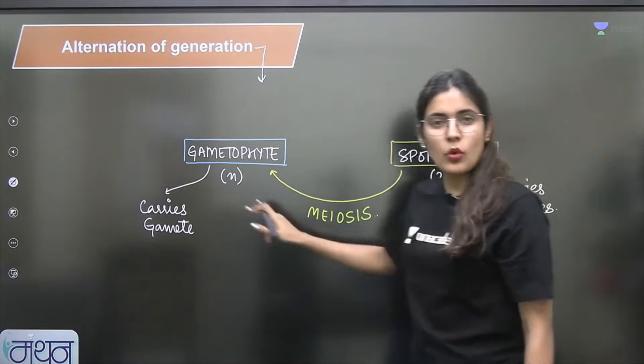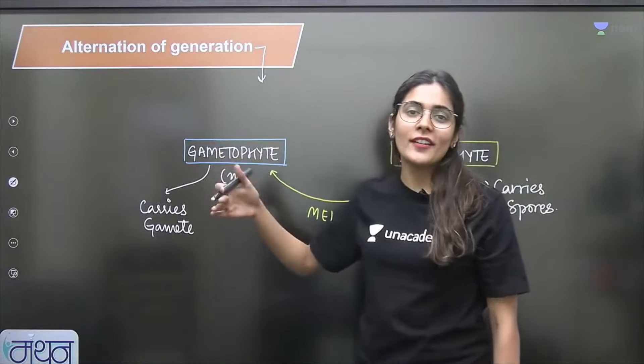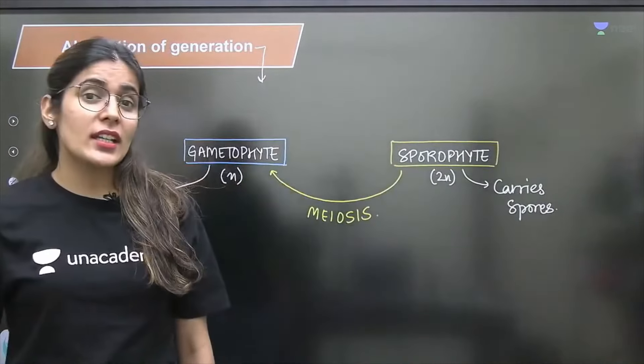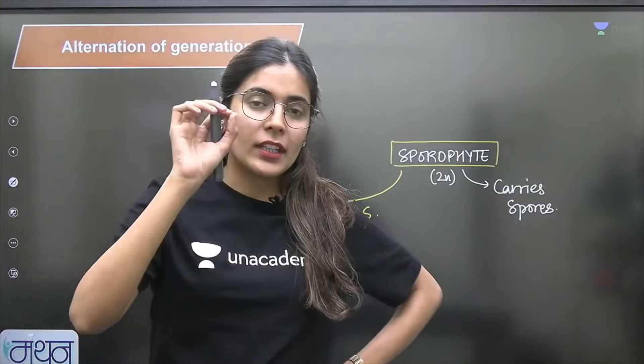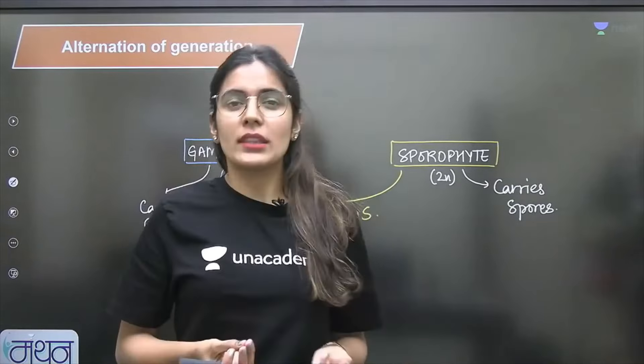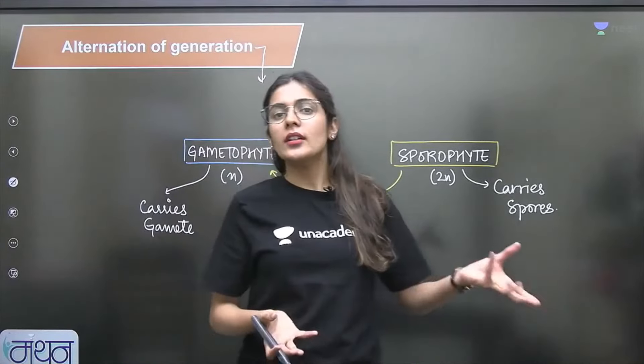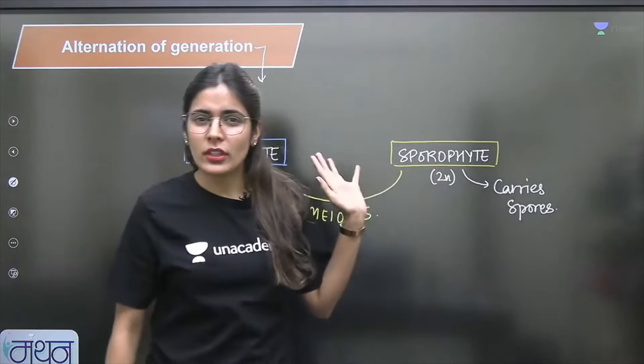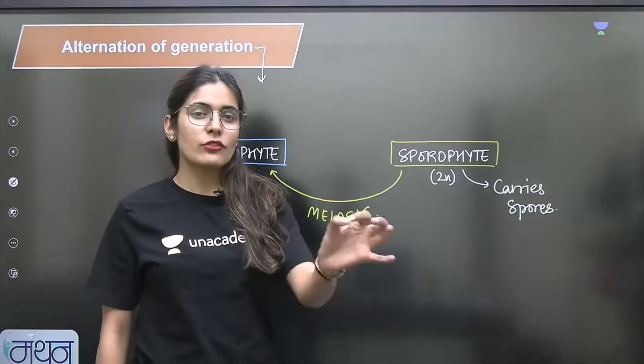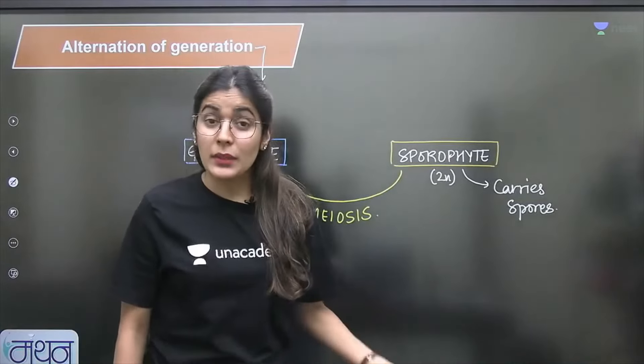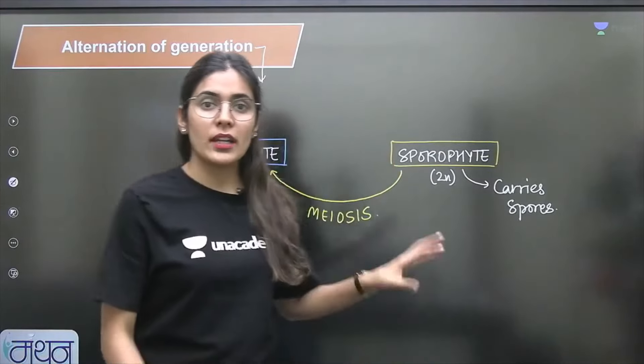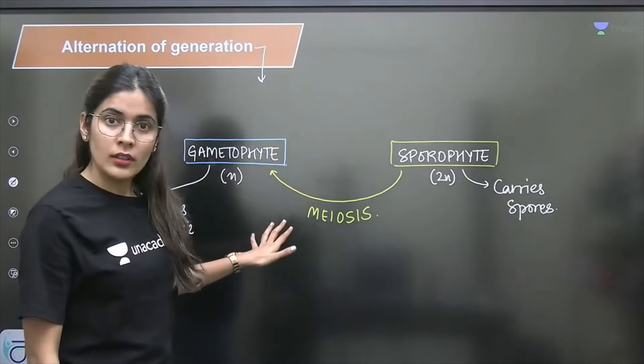So sporophyte is diploid. It has to become haploid through meiosis. After meiosis in humans, there's no elaborate structure, only gametes form, fusion occurs, and the next generation comes. But in plants, there are structures that are haploid. It's a proper multicellular mass that is haploid.